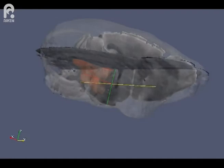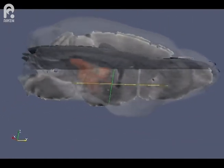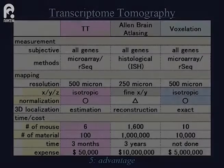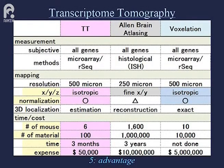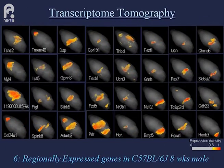Expression maps are well suited for the standard coordinate Waxholm space on the web, which includes multiple biological atlases such as MRI images. Compared to existing comprehensive maps produced with other methods, our maps are spatially isotropic and easy to be normalized. The procedures are time and cost effective, so transcriptome tomography enables researchers to create their own datasets in a variety of experimental conditions, and the maps can be compared in the same 3D space.